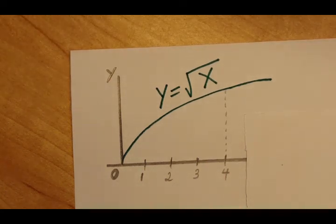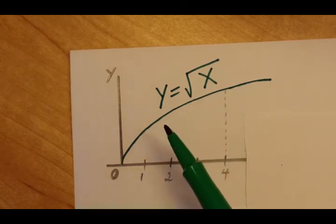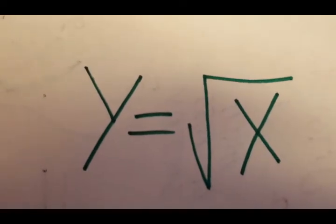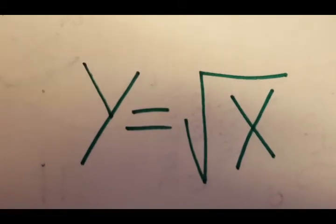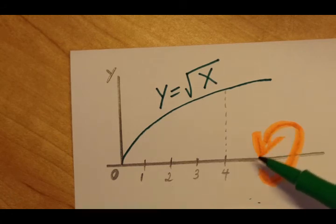This is a volume integration problem from the section on solids of revolution. What that means is that we have a function, like we have here y equals the square root of x, and we're going to take this function and revolve it.